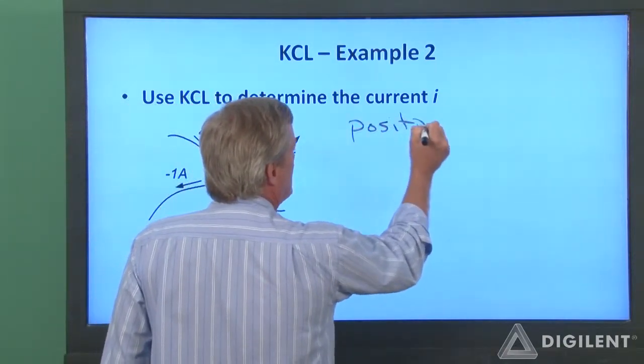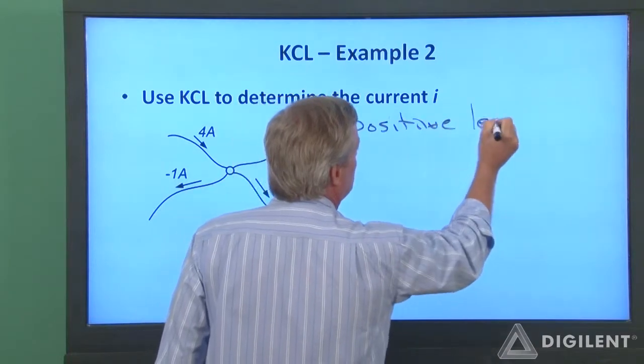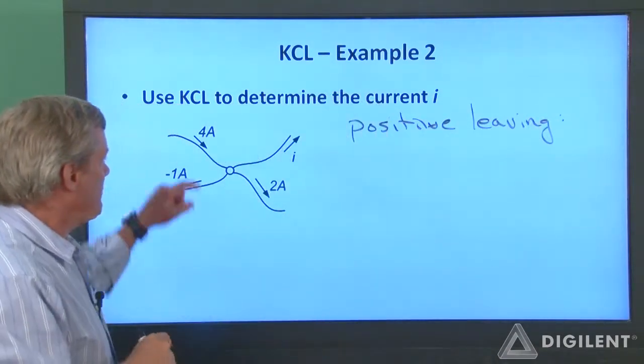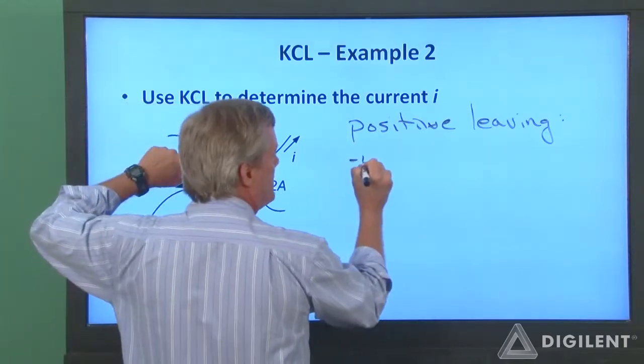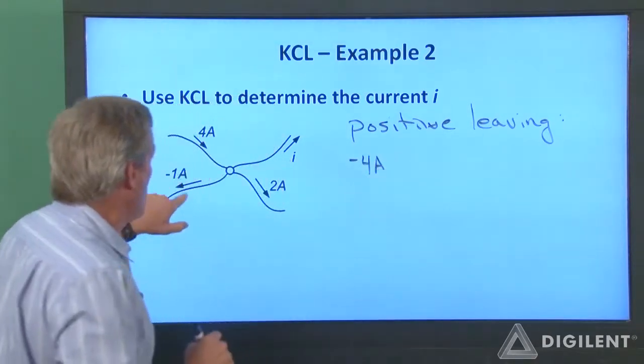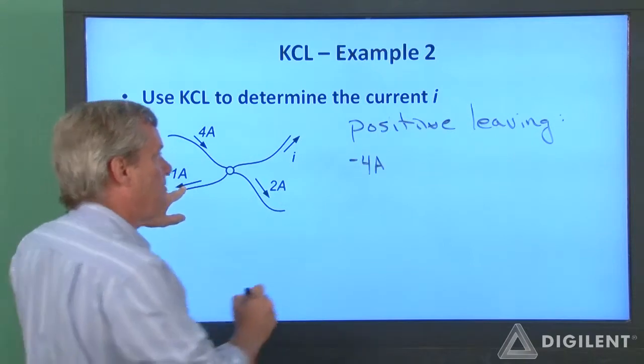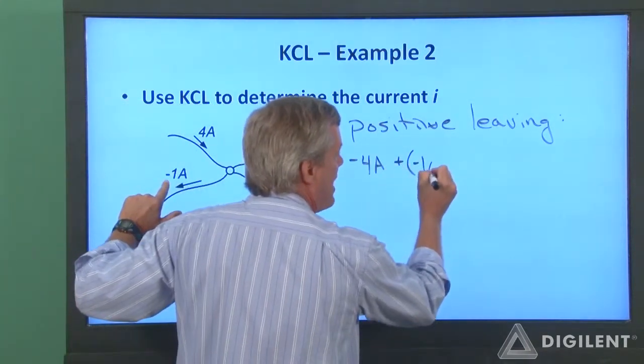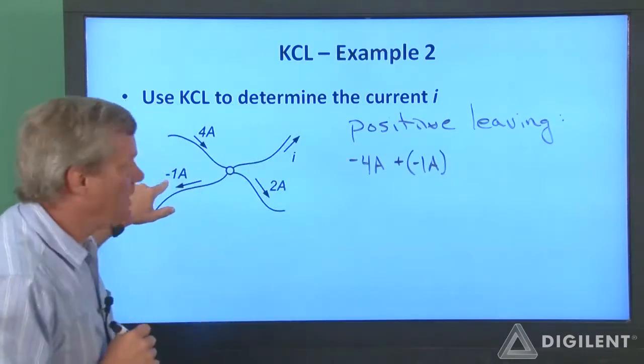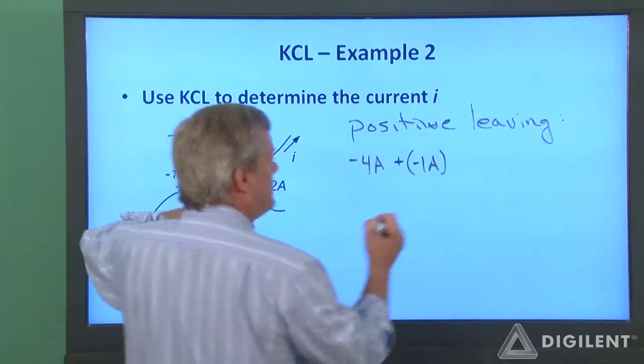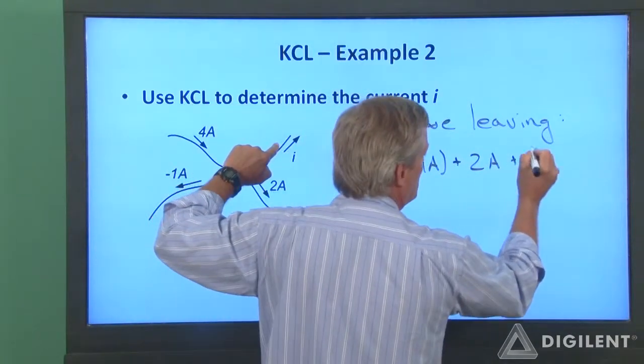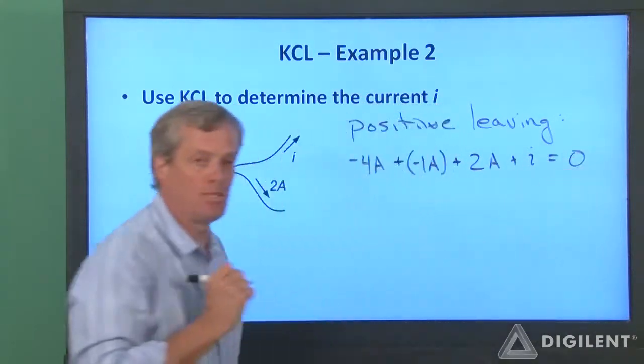So first I'll say positive is leaving. If positive currents are leaving, 4 amps is entering. It's a negative 4 amps. We have a current leaving here, which is going to be a positive contribution, but it has a negative magnitude, so plus negative 1 amps. This guy is leaving. He's positive, so plus 2 amps, and I is leaving, which is plus I. Those have to sum to zero.